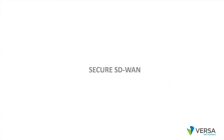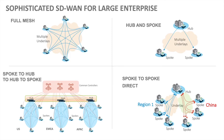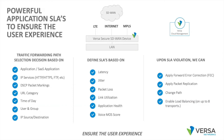In terms of SD-WAN, we support the most sophisticated overlay topologies — full mesh and hub-and-spoke, but also a powerful spoke-to-hub-to-hub-to-spoke topology for large global enterprises with regional hubs. We offer powerful application-level SLAs to ensure the user experience, and we can have different SLAs for every individual application.